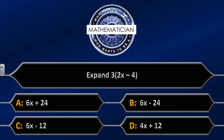Question three: expand three open brackets 2x minus four close brackets. The possible answers are: A equals 6x plus 24, B equals 6x minus 24, C equals 6x minus 12, D equals 4x plus 12. I'm going to give you another ten seconds starting now.